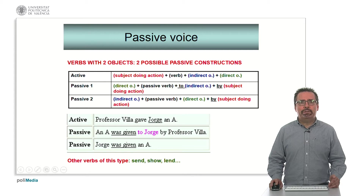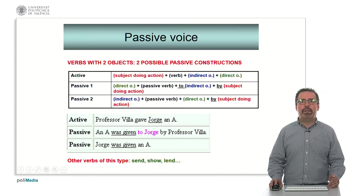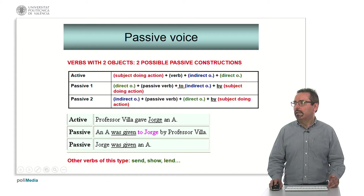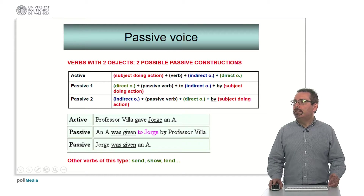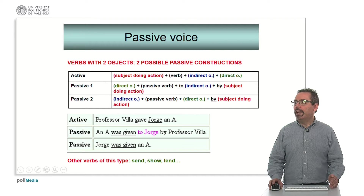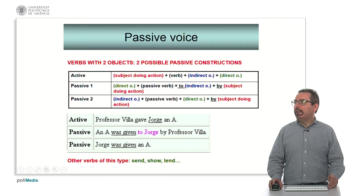We have to mention the specific case of verbs that can take two different objects. Normally one of them is a personal object and the other one is a thing object. In this case, we have two possible passive constructions. In the active, we have a subject doing the action plus the verb, plus the indirect object or the direct object. And we have two possible passive constructions: taking the direct object of the active as the subject of the passive, or taking the indirect object as the subject of the passive sentence.